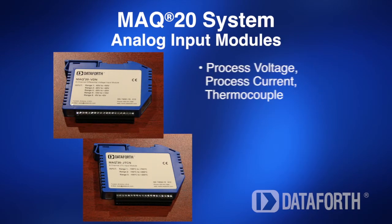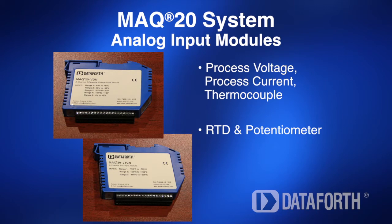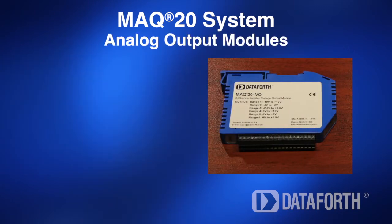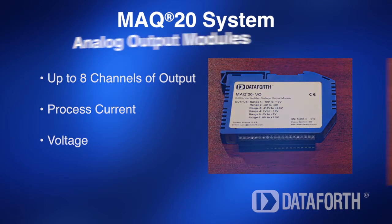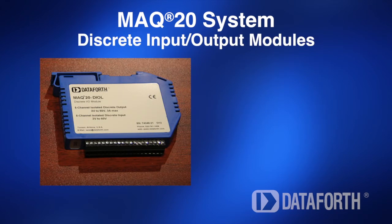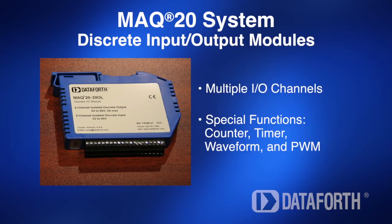The analog input modules interface to standard industrial sensors and equipment and provide up to 16 channels of isolated input. Analog output modules provide up to 8 channels of isolated, high-level process current or voltage signals to drive valves, heaters, relays, and other equipment. The discrete I/O modules offer multiple isolated, high-level input and output channels and advanced special functions.